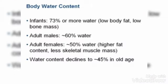In infants, 73% of the body weight is water. In adults, 60% of the body weight is water. In adult females, it is 50%, and water content declines to 45% in old age. So in old age this percentage will decrease. We can see that the maximum portion of our body weight is water.